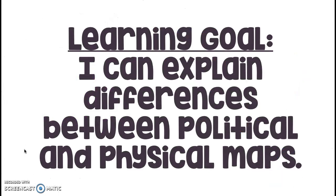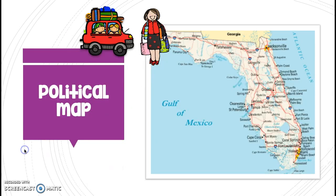Our learning goal for today says: I can explain differences between political and physical maps. Political and physical maps are two different types of maps. A political map looks like this. A political map shows streets and major highways, big cities and little cities, and it shows borders.